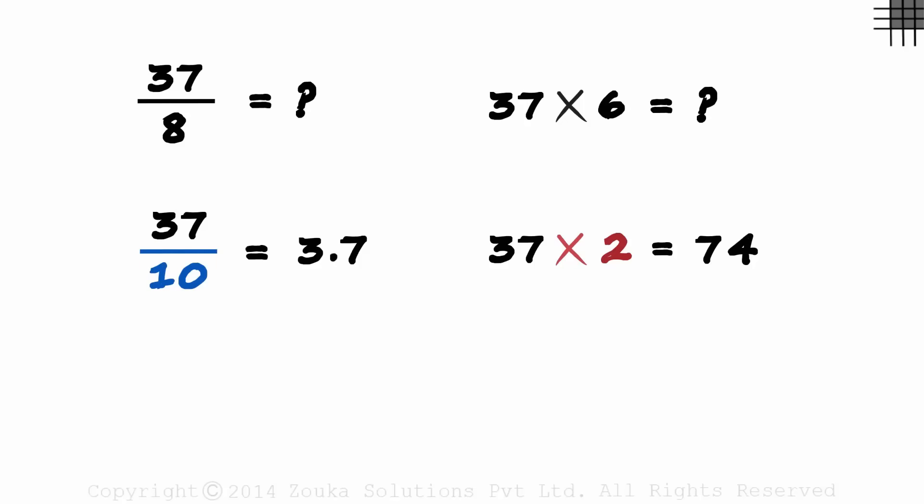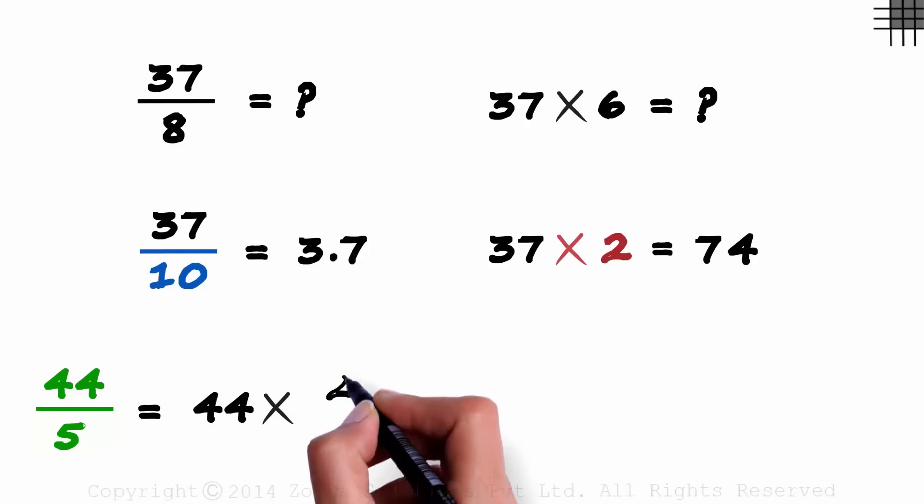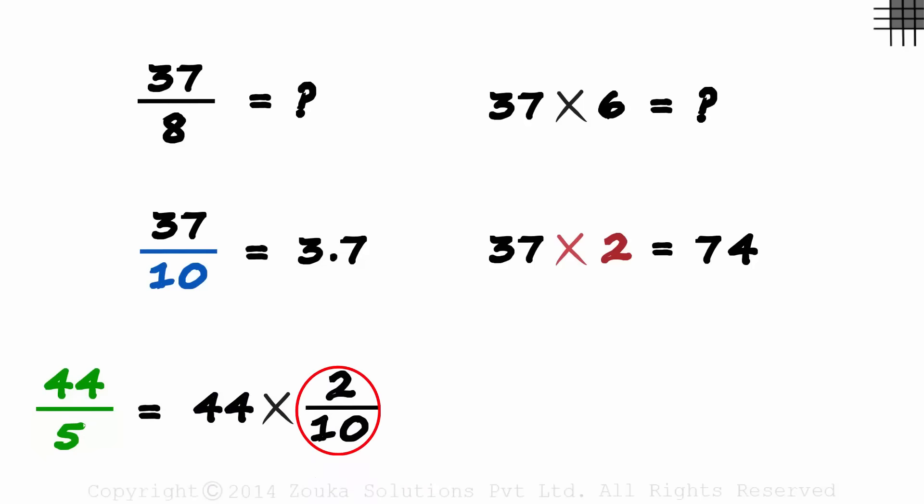So what if I ask you to divide 44 by 5? Instead of dividing 44 by 5, we can just multiply it with 2 over 10. 2 over 10 is actually 1 over 5, and multiplying something with 1 over 5 is the same as dividing it with 5.